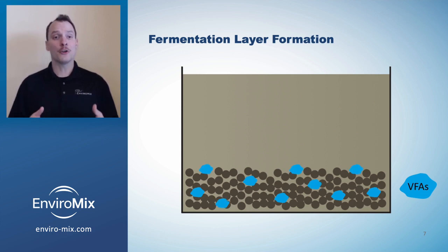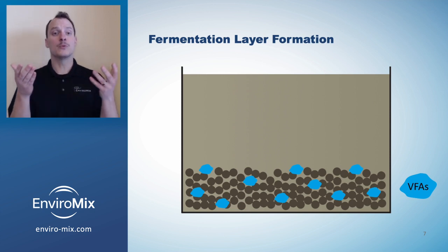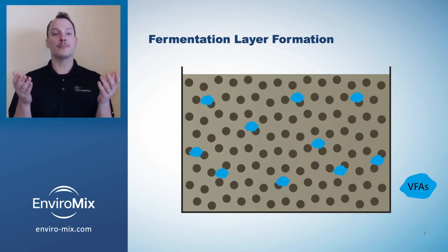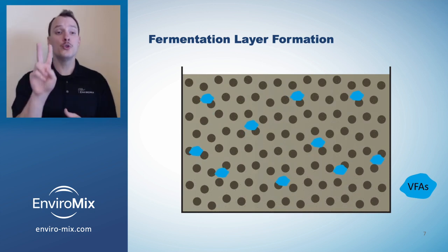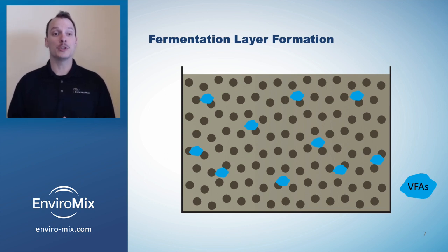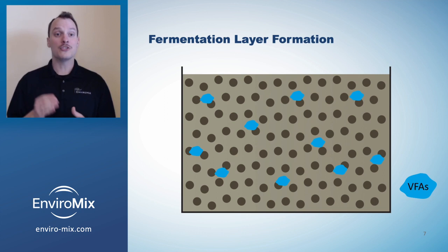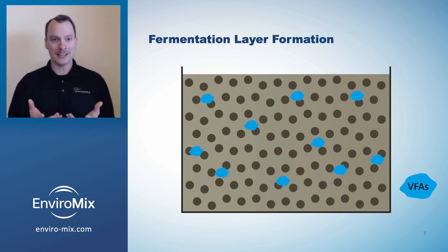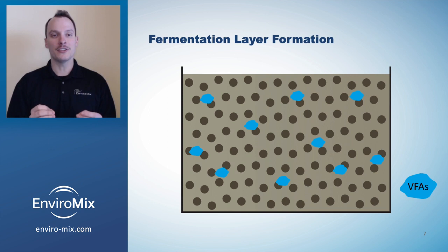Intermittently, the anaerobic zone is completely mixed, which fully suspends the fermentation blanket for two reasons. One, it discourages methanogenic activity which would consume VFA, and two, it recharges the blanket with organic matter for more VFA production.